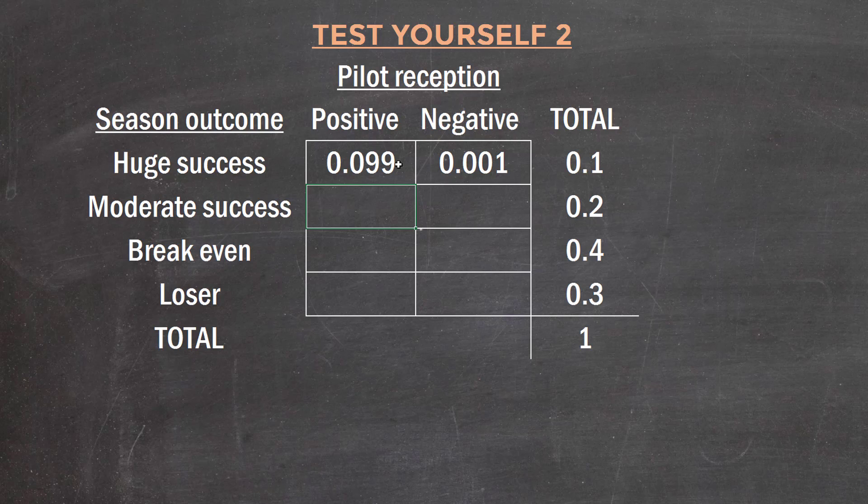Same thing goes here, 70% of moderate successes had a positive pilot reception, so that's 0.7 times 0.2, which is 0.14, meaning this is 0.06.